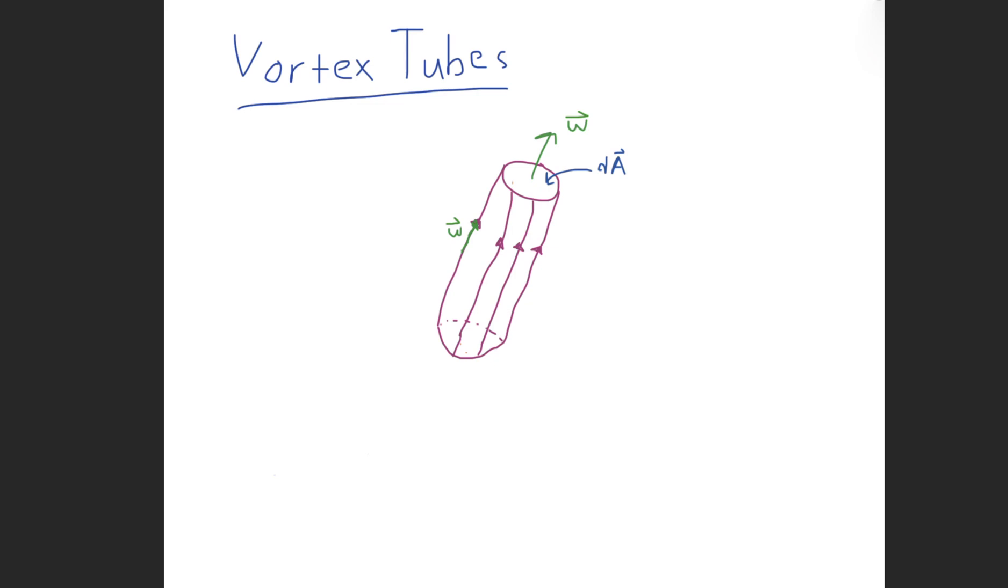Now we're going to start off with the discussion of the concept of the vortex tube. This is actually very similar to the stream tube which we've already discussed. But just to give you a quick recap, a vortex line is just a curve within the fluid that is everywhere tangent to the vorticity vector.